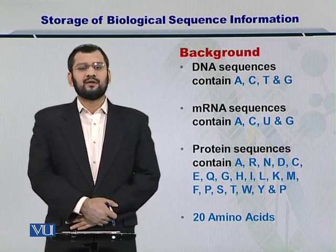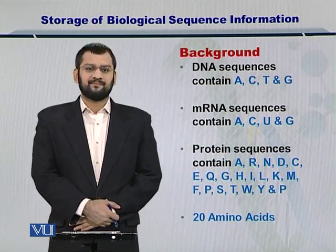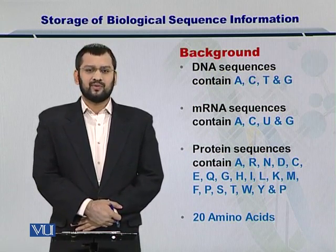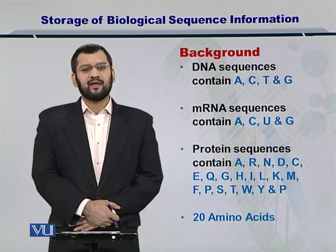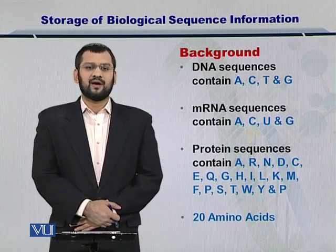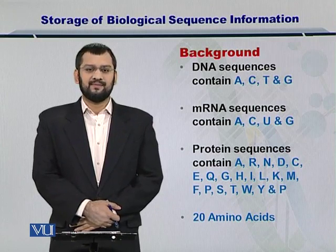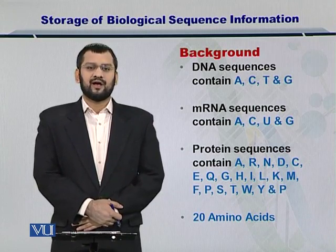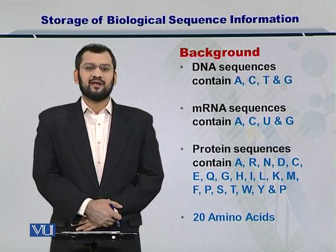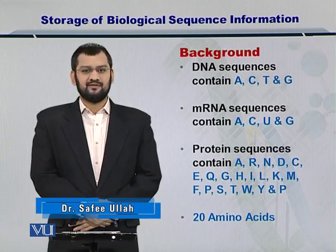You know that the biological sequence information may be of three different types. The first one can be the DNA. At the DNA level, the sequence information primarily consists of A, T, C, and G. While for the RNA, the information is changed a little bit and you have A, U, G, and C.